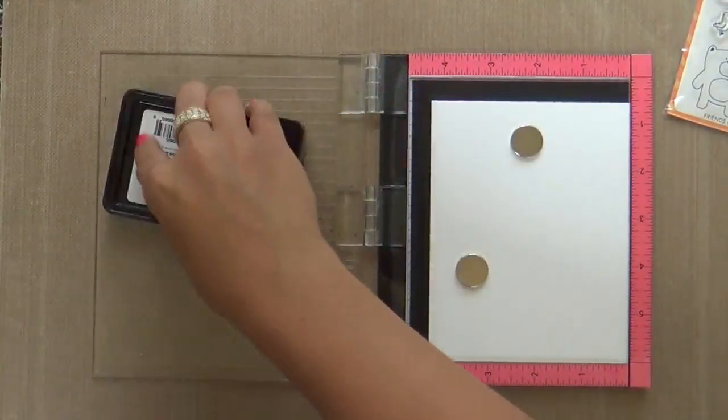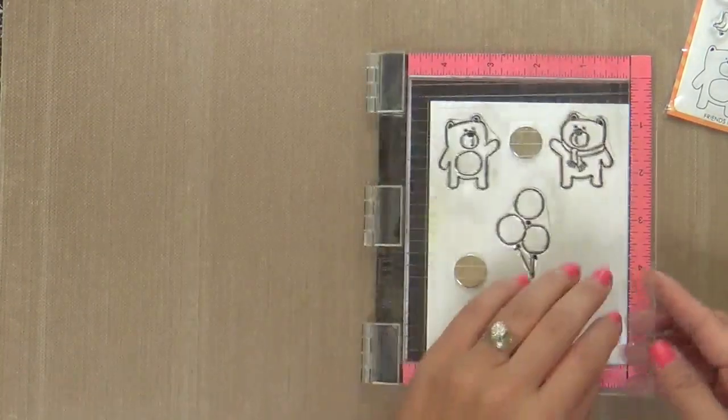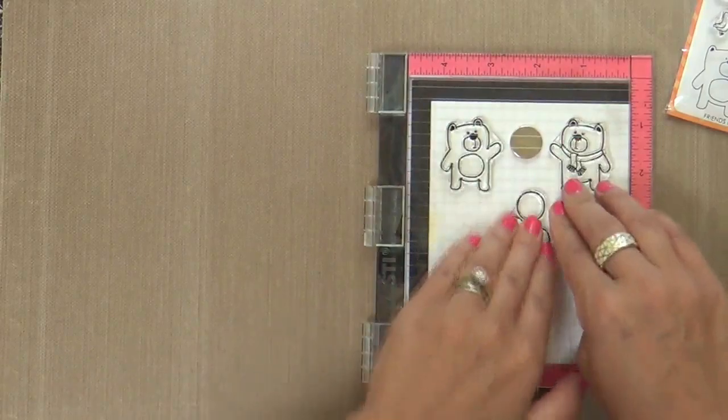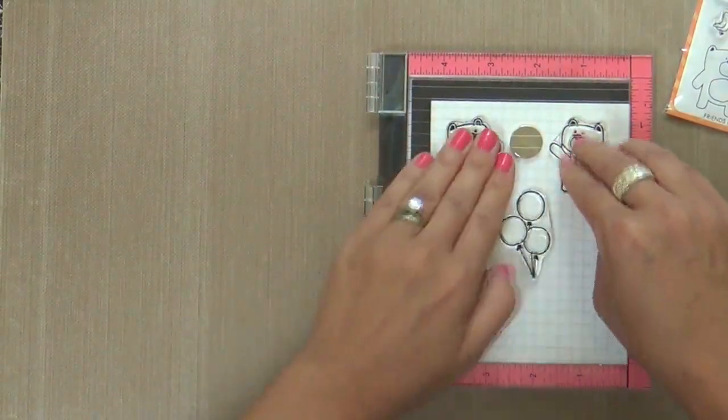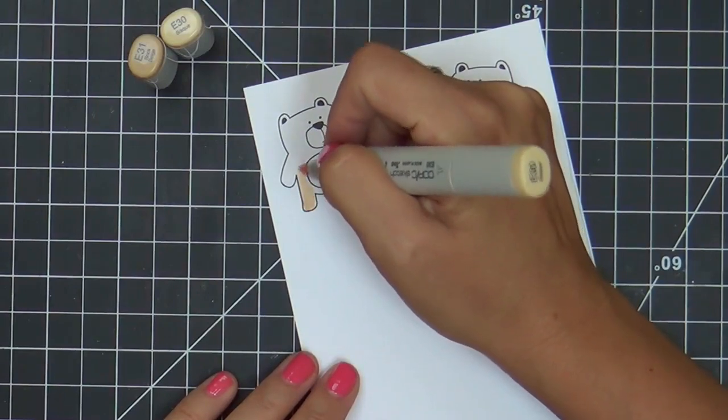I've got three of the images from this Friends for All Seasons Fall. I've got the two bears and the little bouquet of balloons. I'm inking them up, I'm using my mini Misti. Sometimes I've got to stamp my images a couple times. That's what's great about the Misti. And I'm moving on really quick.